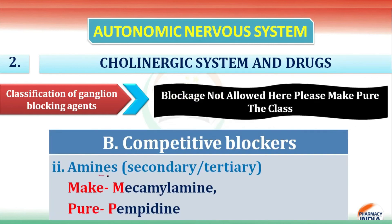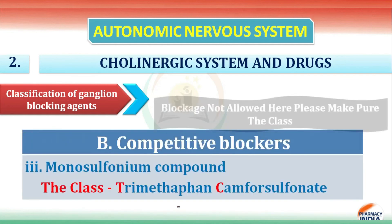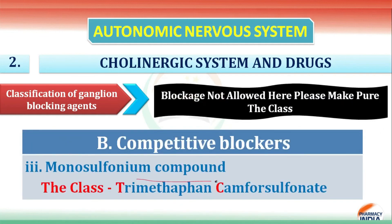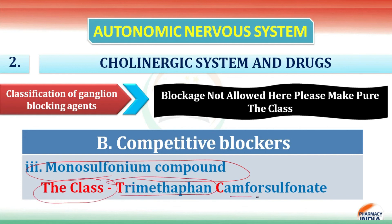The second subclass of competitive blockers is secondary or tertiary amines. There are two drugs: mecamylamine, denoted by 'make,' and pempidine, denoted by 'pure.' The third subclass is monosulfonium compounds: T for trimethaphan and C for camphorsulfonate.